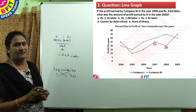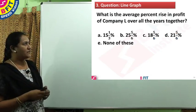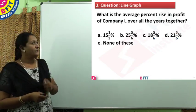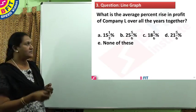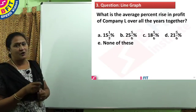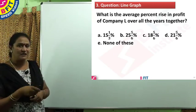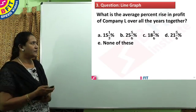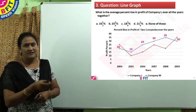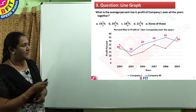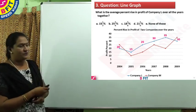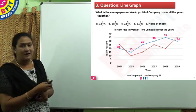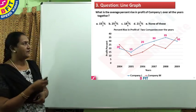We will see the next question — question number 3. What is the average percent rise in profit of company L over all the years together? Average percent rise is asked. The data itself is given as percent rise in profit over the years. When average percent rise is asked, just add all the data and divide by the number of years. We have 6 years of data, so we divide by 6.